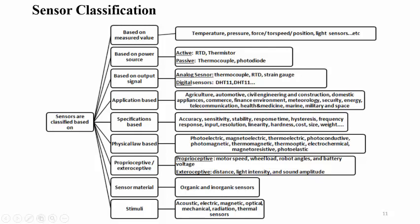Application-based classification depends on the area used or the application. For example, in the agricultural field there are crop-related, soil, or moisture sensors. Then automotive applications, and civil and infrastructure or construction-line related applications such as structural analysis or structural monitoring — for example stress, strain, and load cell sensors.